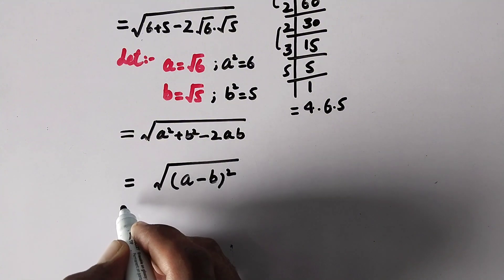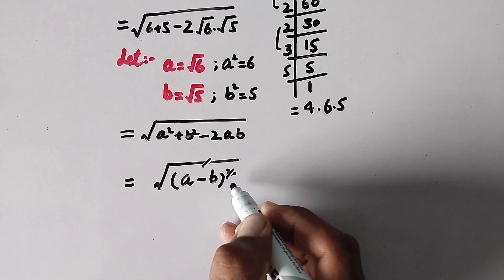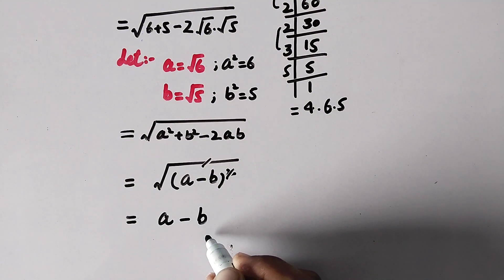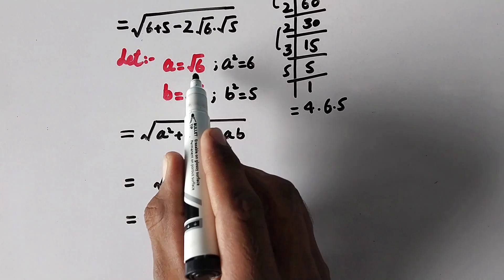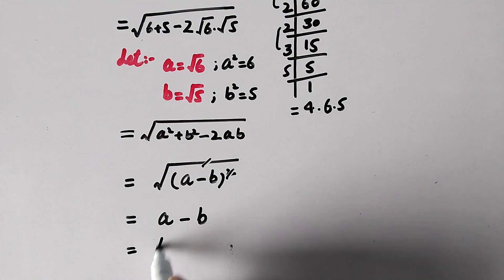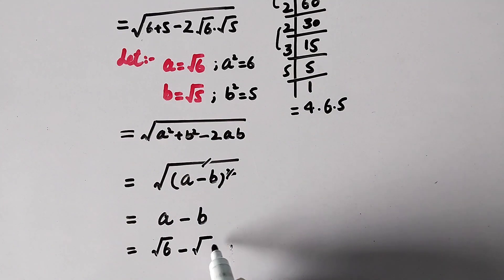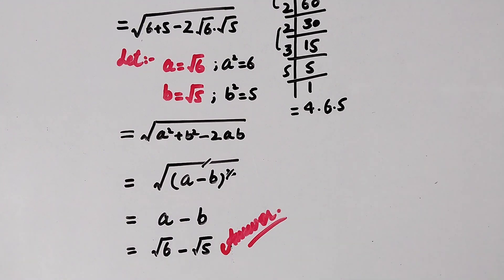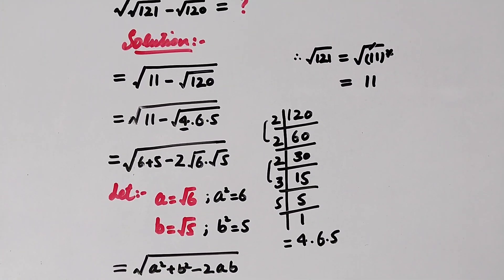Now this square root will be cancelled by this square and we are left with a minus b. Recalling that a equals square root of 6 and b equals square root of 5, our final answer is square root of 6 minus square root of 5. I hope you liked the video. Please subscribe to my channel for more videos. Thanks for watching, bye.